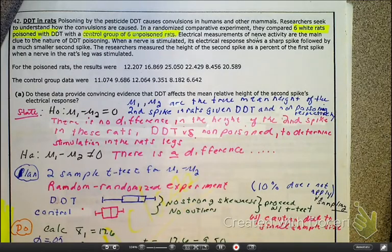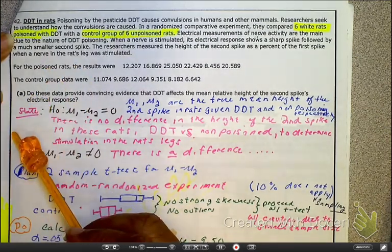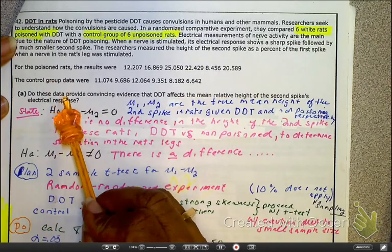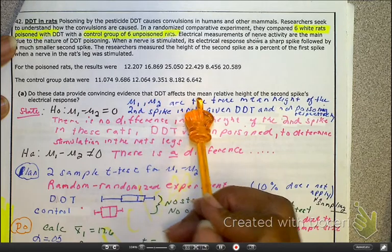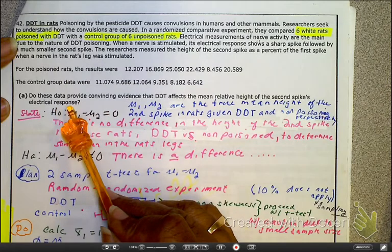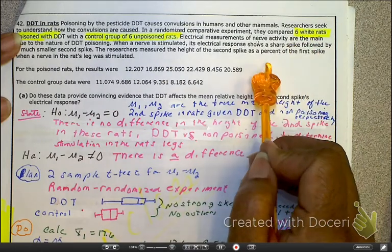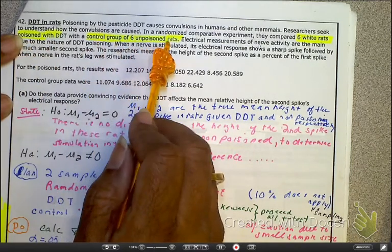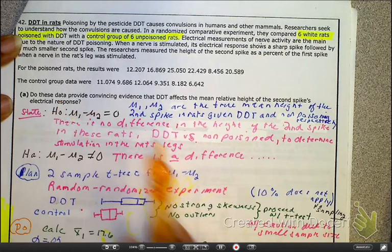Now I'd like to go to page 17 of your notes, looking specifically at problem number 42, just in case my pages are off in the future. Okay. Now, go ahead and read this scenario. Put everything in your calculator. Let's get this party started. Okay, so do these data provide convincing evidence that the DDT affects the mean relative height of the second spike's electrical response? So here's the thing. You've got two populations. You've got the white mice that were given the DDT poison, and then you've got the control group in which they were given none. And they're looking for nerve activity. And we're trying to determine if there's a difference.